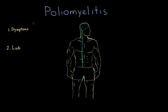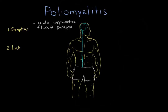The buzzword that you're going to encounter for polio is acute asymmetric flaccid paralysis. A patient is having an acute infection — it's a sudden onset. Usually, we're thinking of a child. In fact, the term 'floppy baby' is often associated with a polio diagnosis, or really any other flaccid paralysis. In polio, it's children less than six months old that are the most commonly affected.